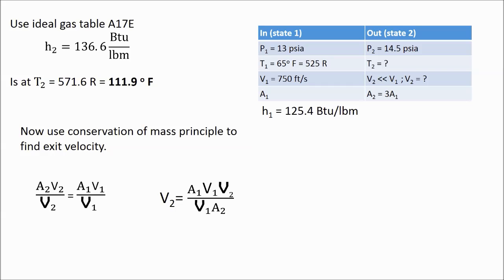Next we will use the conservation of mass principle to find the exit velocity. Area times velocity over the specific volume is equal to the mass flow rate. This must be equal at both the entrance and the exit.